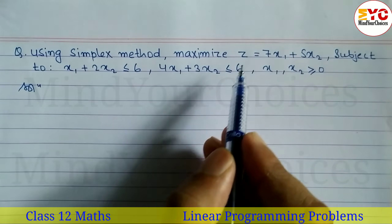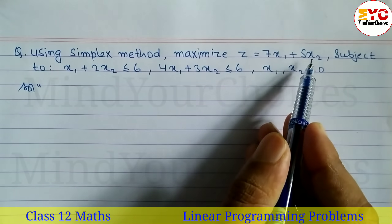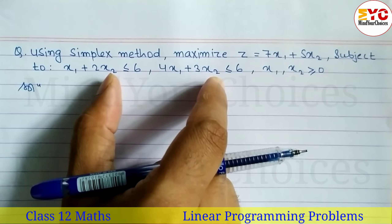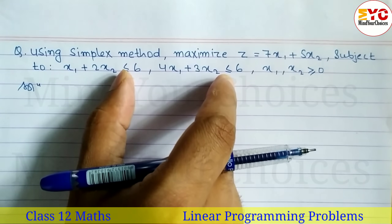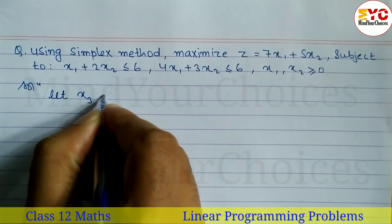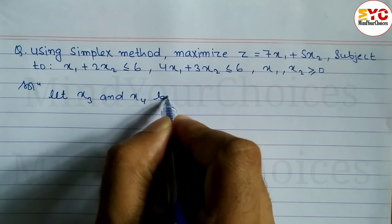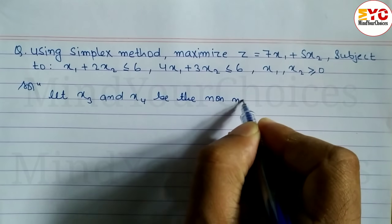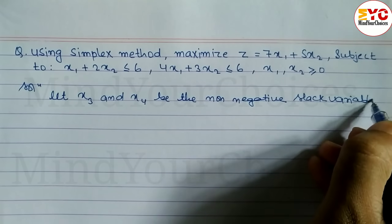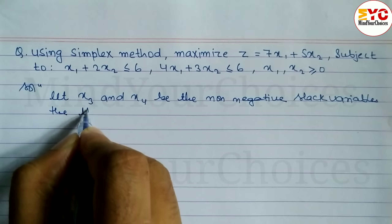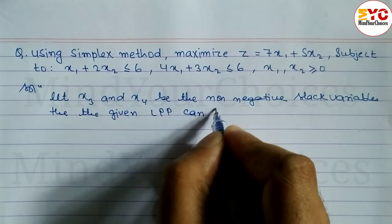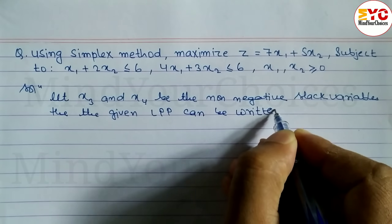Solution. We have z equal to 7x1 plus 5x2. The given LPP — linear programming problem — can be written in standard form using slack variables, because we have two inequalities.